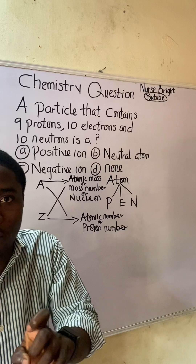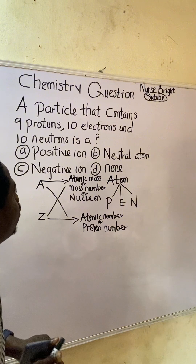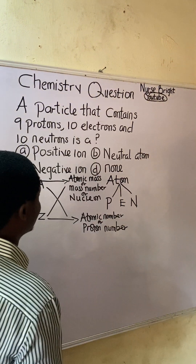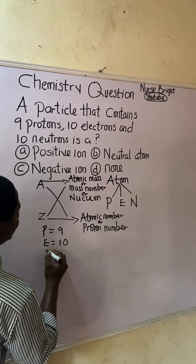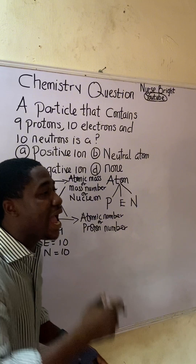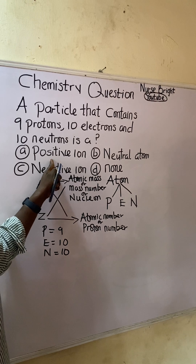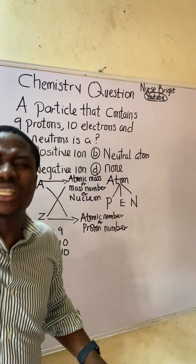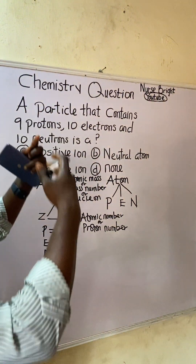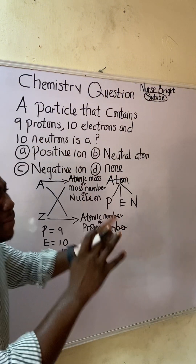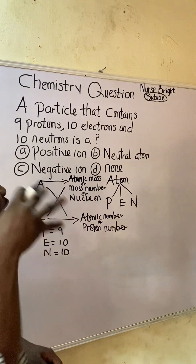This question is asking us about a particle — the word 'particle' can also be replaced by 'atom.' It's asking about an atom that has a proton number of nine, electron number of 10, and neutron number of 10. Is it a positively charged ion, a neutral atom, a negative ion, or none of the above? A charged atom is called an ion.